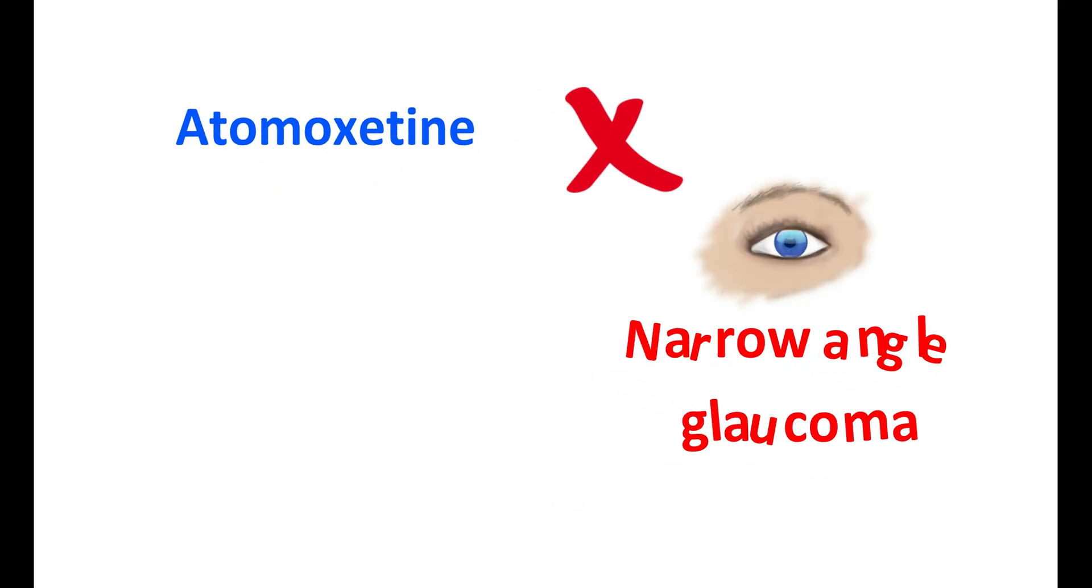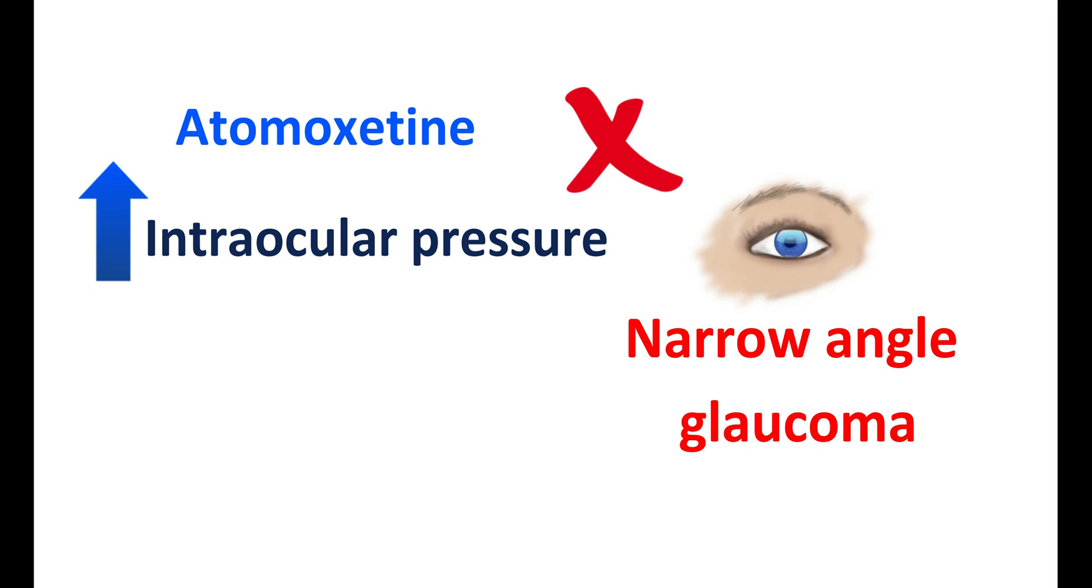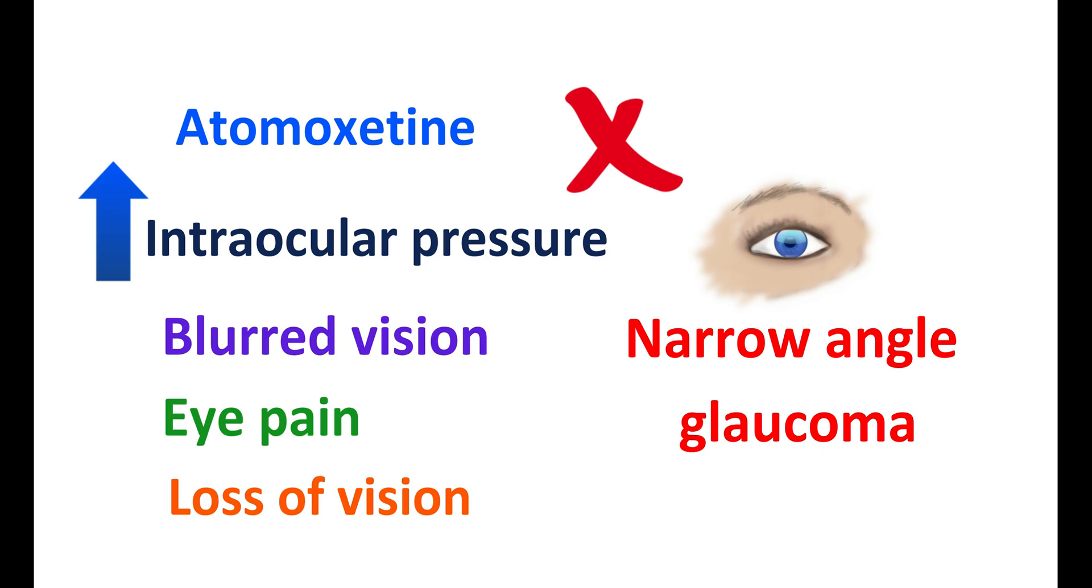Similarly, Atomoxetine is contraindicated in people with narrow angle glaucoma since this medication can increase the intraocular pressure. Aqueous humor is not drained properly leading to elevated intraocular pressure resulting in blurred vision, eye pain, and even loss of vision. That's why in people with narrow angle glaucoma, Atomoxetine is contraindicated.